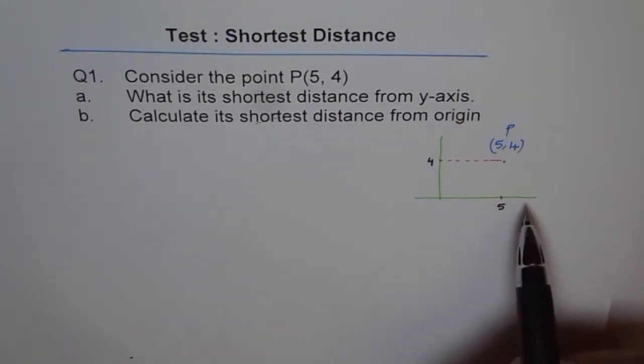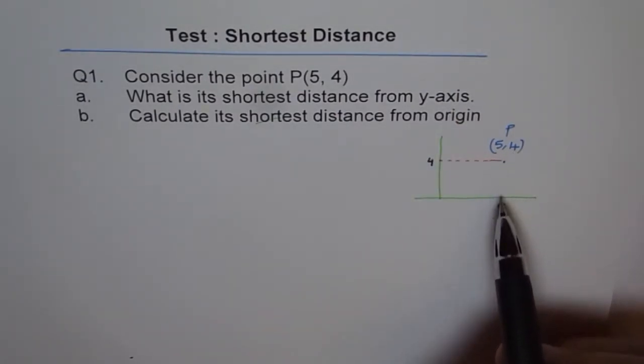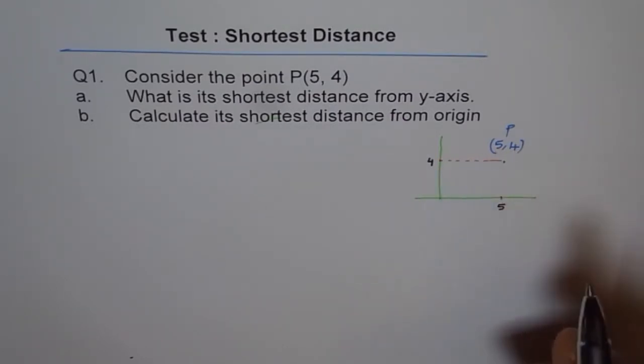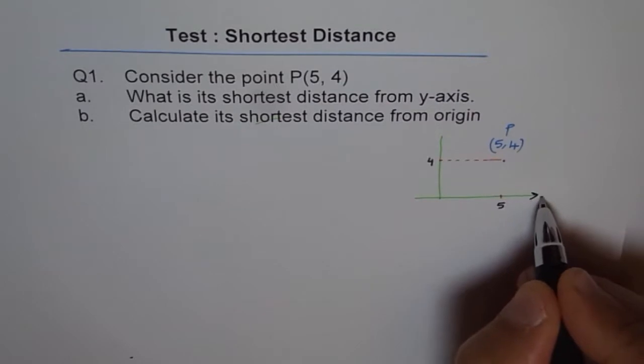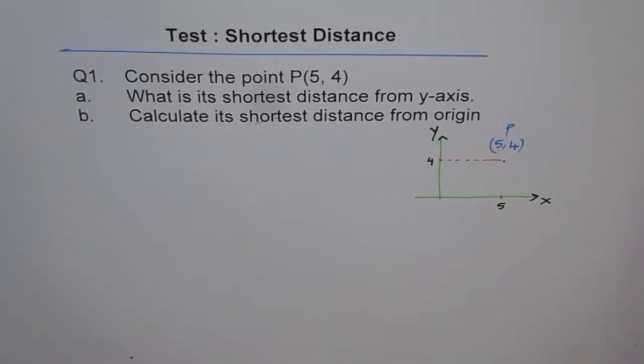Similarly, I could have asked what is the shortest distance from x-axis. So it'd be the y value. Do you see that? How much away it is from x-axis, correct? So it translates 4 units up, so it is 4 units away from x-axis and 5 units away from y-axis. This is your x-axis and that is your y-axis. That is part a, correct.